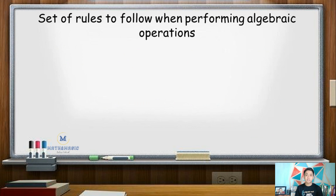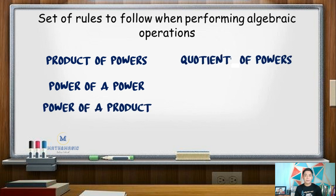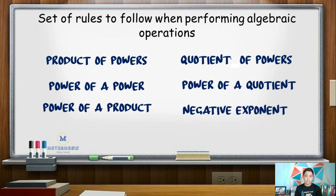Laws of exponents are a set of rules to follow when performing algebraic operations like multiplication, division, and exponentiation. This includes product of powers, power of a power, power of a product, quotient of powers, power of a quotient, and negative exponent.